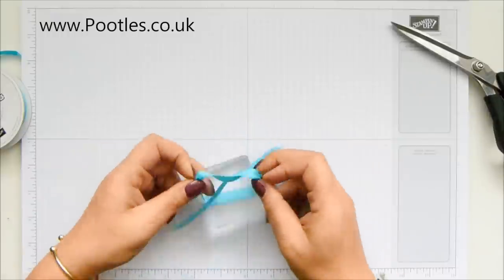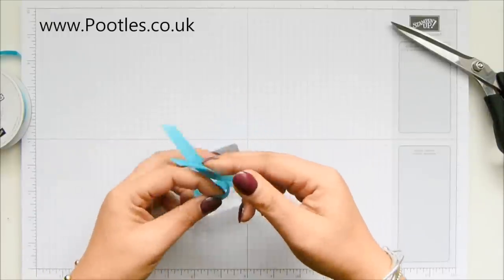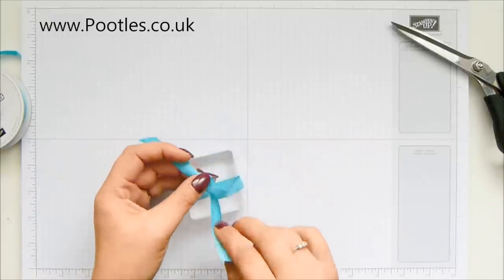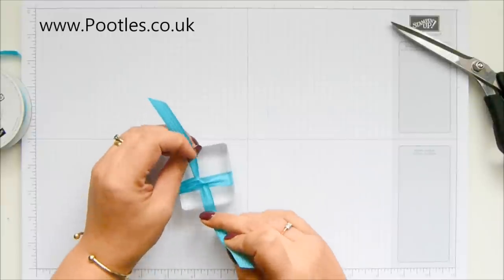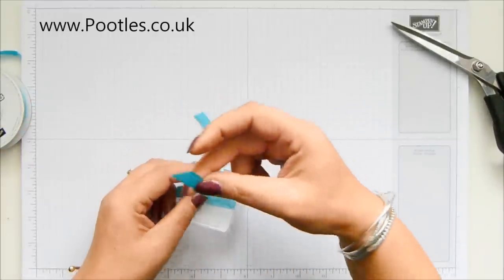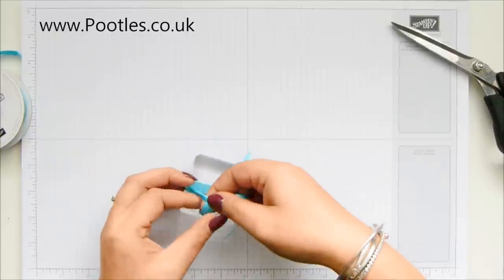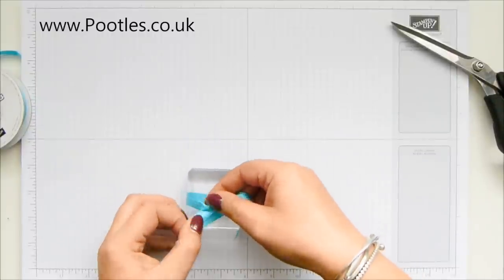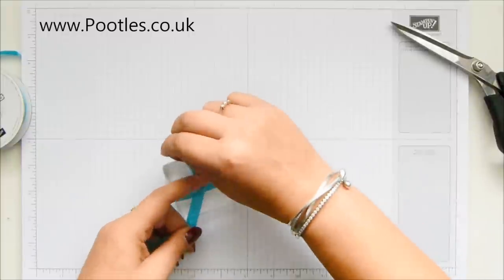So when you use it, it's whichever one is under, because some people go with the other hand as the one round, but whichever one you put under is the one that you take, you form the loop and knot with.